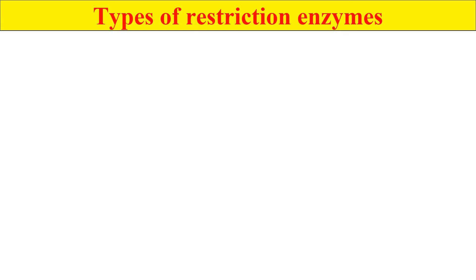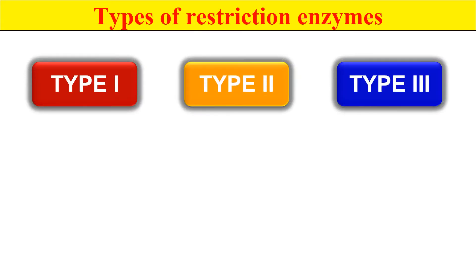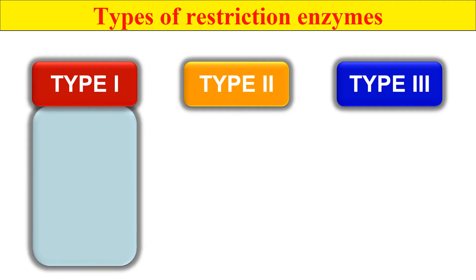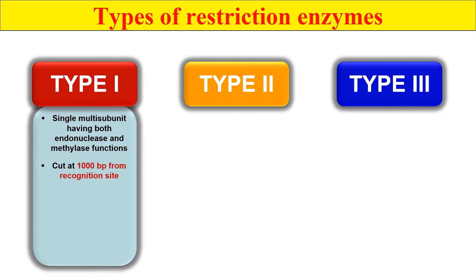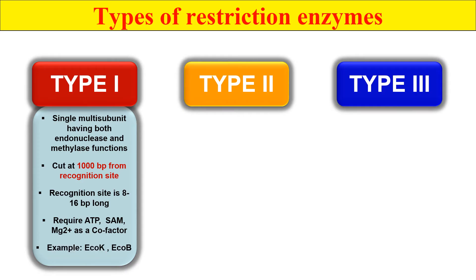There are generally three types of Restriction Enzymes: Type I, II, and III. In the case of Type I, they have a single multi-subunit which has the function of both endonuclease and methylation. They do not cut within the recognition site — they recognize their site but cut 1000 base pairs away from their recognition site. Their recognition site is generally 8 to 16 base pairs long. They require ATP, S-Adenosyl Methionine, and Magnesium as cofactors. Examples of Type I Restriction Enzymes are EcoK and EcoB.